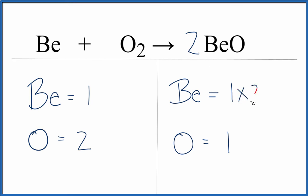One times two, that equals two. But the oxygen, one times two, that equals two. So we fixed the oxygens.